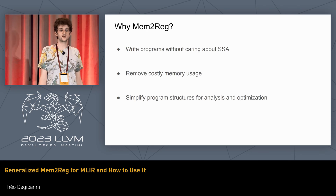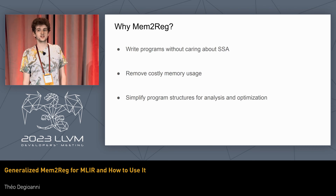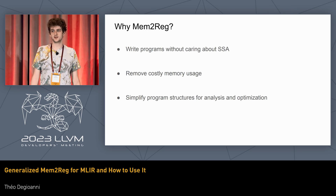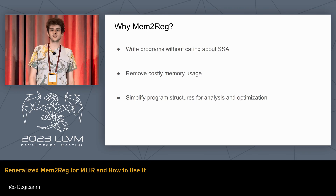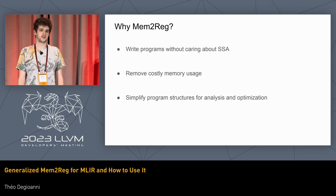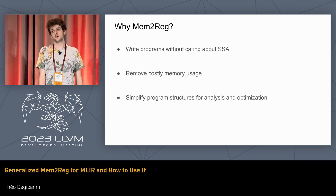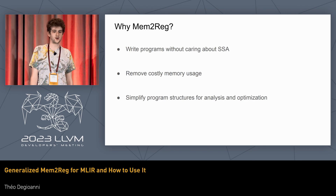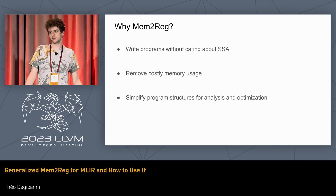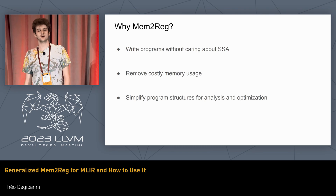One of the reasons to use Mem2Reg is, first of all, to write programs without caring about SSA. Developers of compiler frontends maybe do not want to care about SSA as much. Mem2Reg is really nice because you can turn your local variables into something that uses the stack and then have Mem2Reg take care of turning it into SSA. It also helps remove costly memory usages and simplifies the program structure — in the example I gave, one of the branches is no longer used.